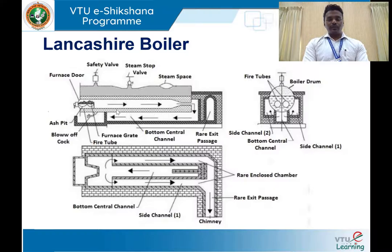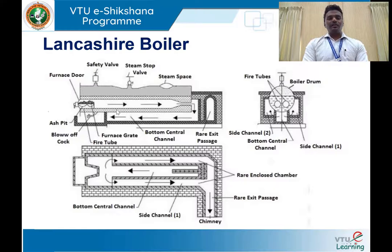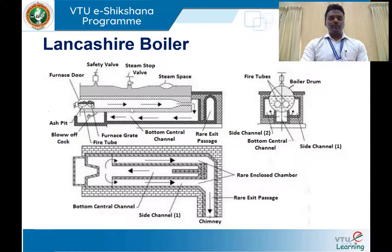The Lancashire boiler mainly consists of a boiler shell — a cylindrical shell fabricated using steel. This boiler shell may run up to seven to nine meters and is kept on a brick structure. That brick structure is constructed in such a fashion that it provides a passage for the circulation of hot gases produced from the combustion of fuel. You can see one flue tube placed inside the boiler shell.